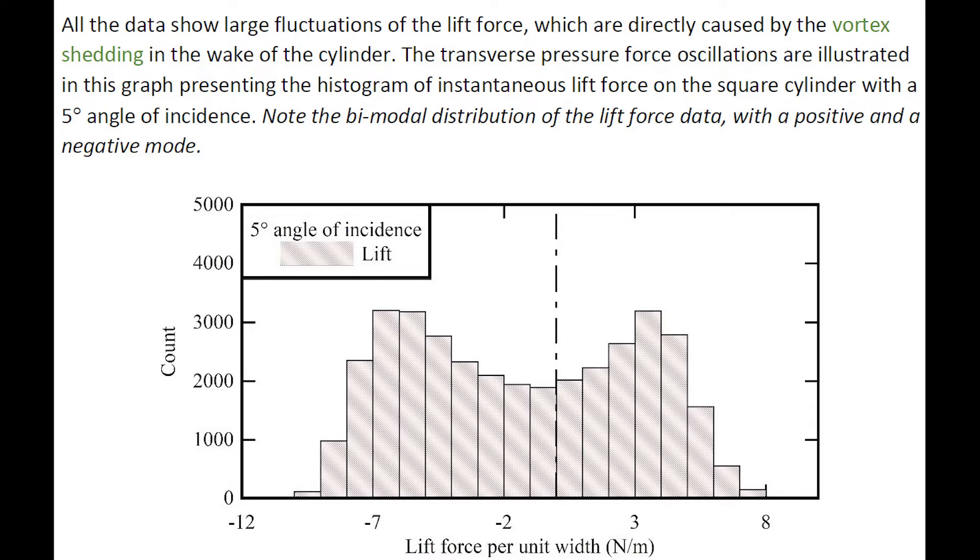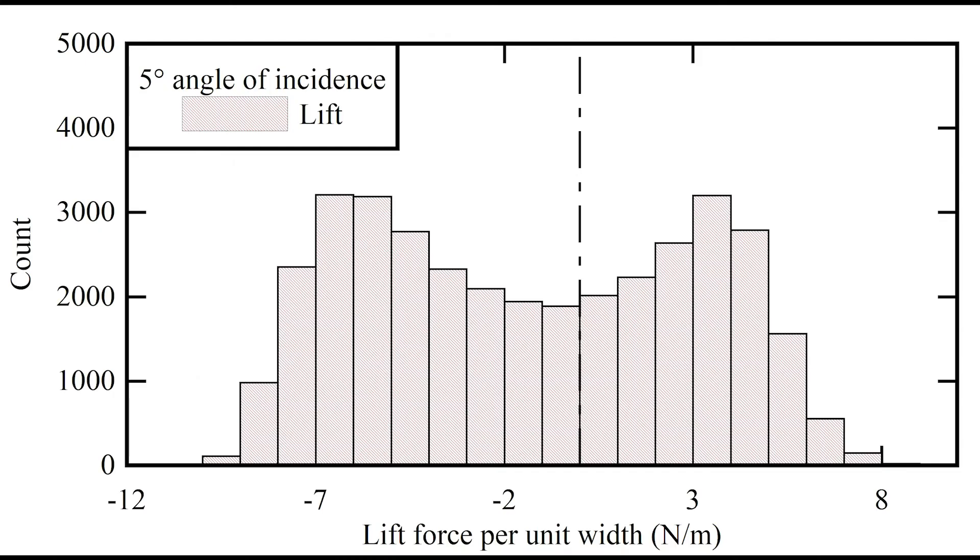These fluctuations are directly caused by the vortex shedding. The transverse pressure force oscillation is illustrated in the following graph, presenting the histogram of instantaneous lift force on the square cylinder for 5 degrees of incidence. One notes the bimodal distribution of the lift force, shifting from a positive to a negative mode and vice versa.